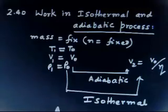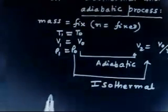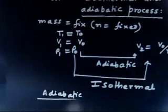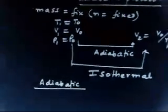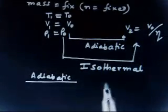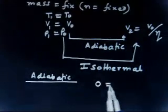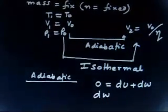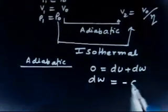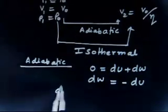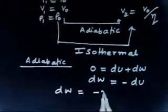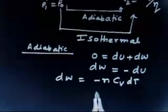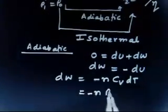In the adiabatic process, dQ = 0. So from the first law: dQ = dU + dW, which gives dW = −dU = −nCᵥ dT.